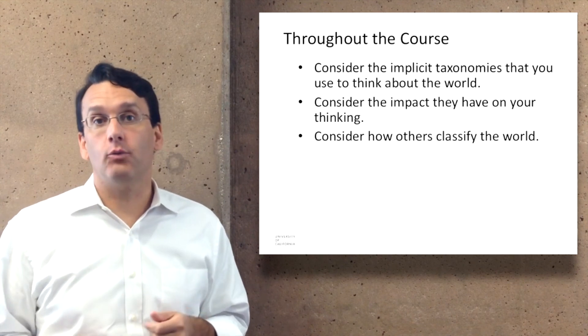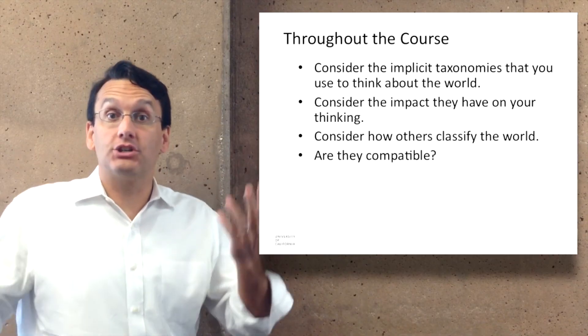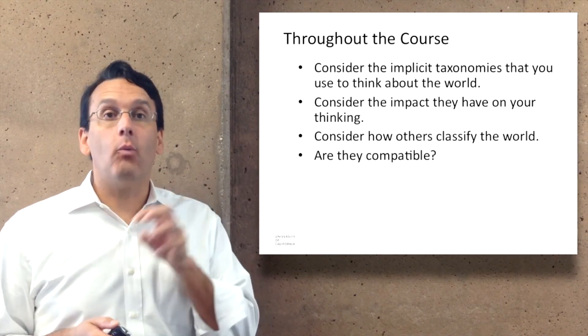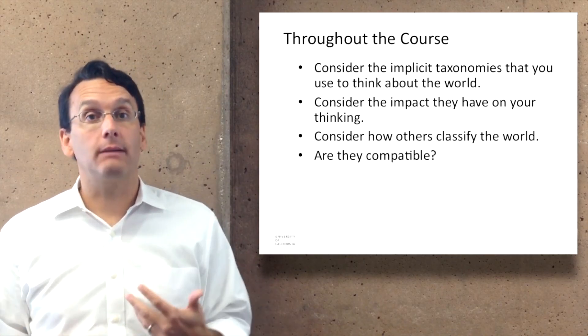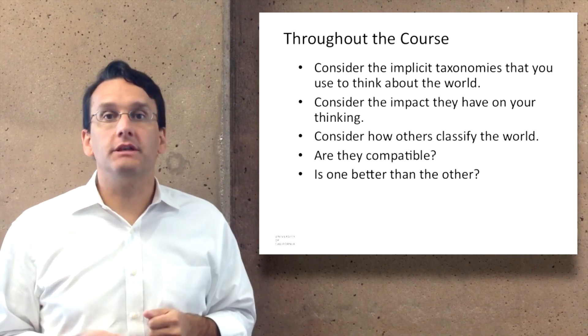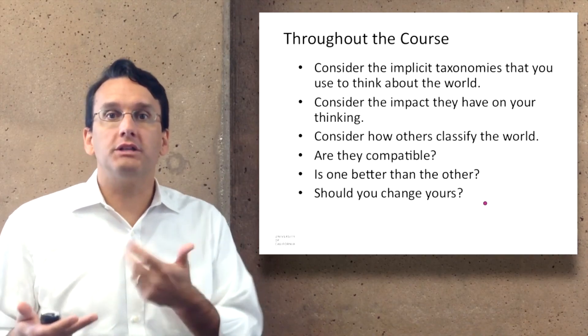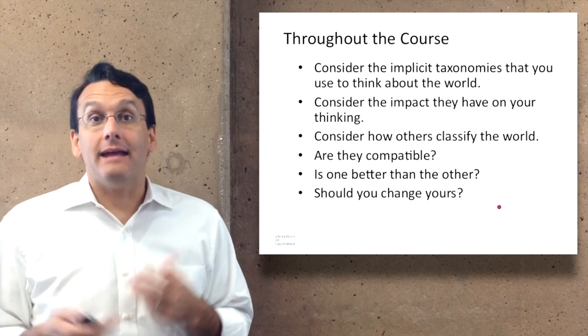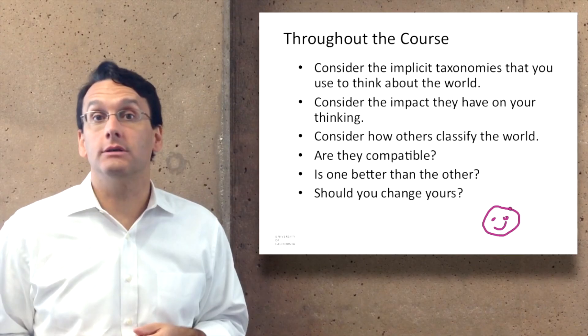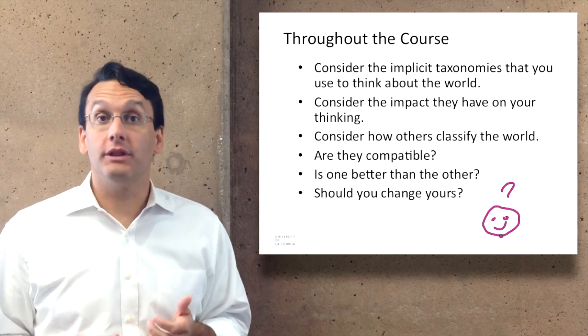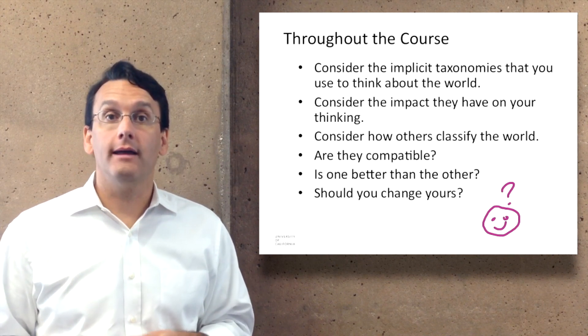We'd also like you to think about ways that other people classify the world: how other students in the class do it, how other people around the world, how we the teaching staff do it, and think about whether or not they're compatible. When you see conflicts between the taxonomies people use, try to think about which one is better than the other one, and consider potentially if you find one that's better than the one that you think about, think about how you can change yours, because ultimately that's one of the important things that happens in education.